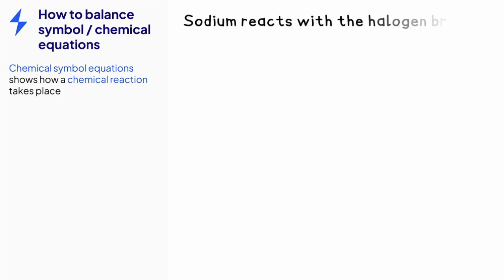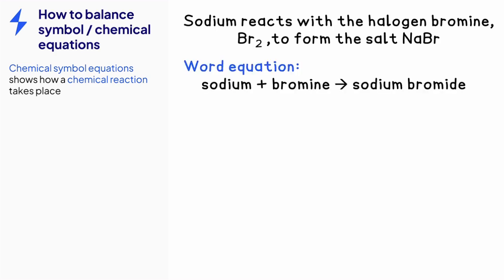For example, the reaction of sodium with bromine forms the salt NaBr. Remember, NaBr is a compound containing two elements, which means that the bromine becomes bromide, so NaBr is sodium bromide. Therefore, the word equation is sodium plus bromine arrow sodium bromide.